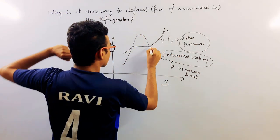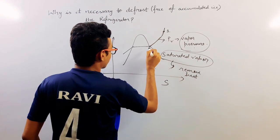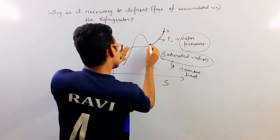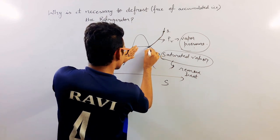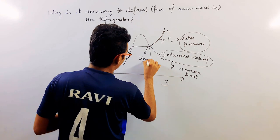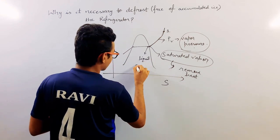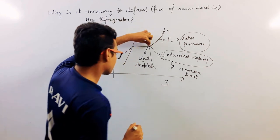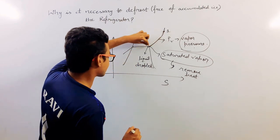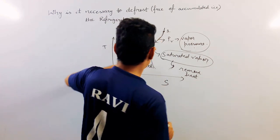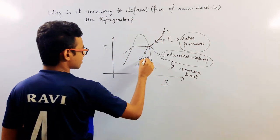That is, a liquid droplet will form just after this point. Here, a liquid droplet will begin to form, like condensation happens. Just after this point, this liquid droplet will form, that is, condensation will begin.